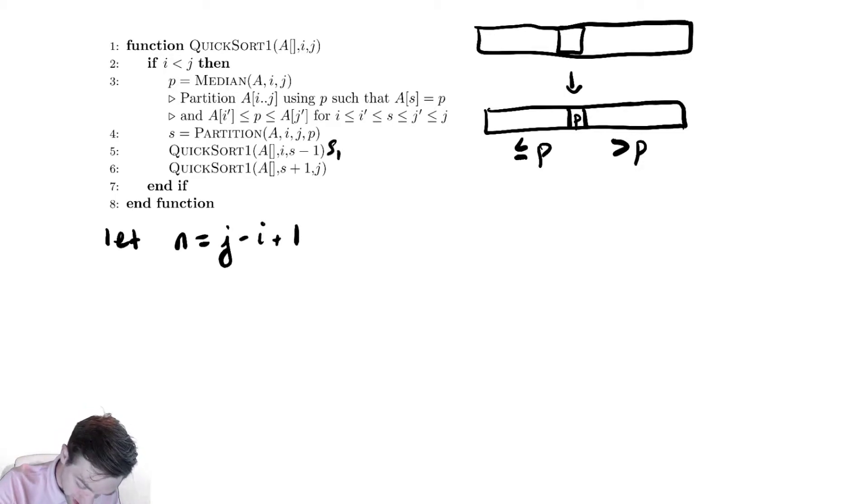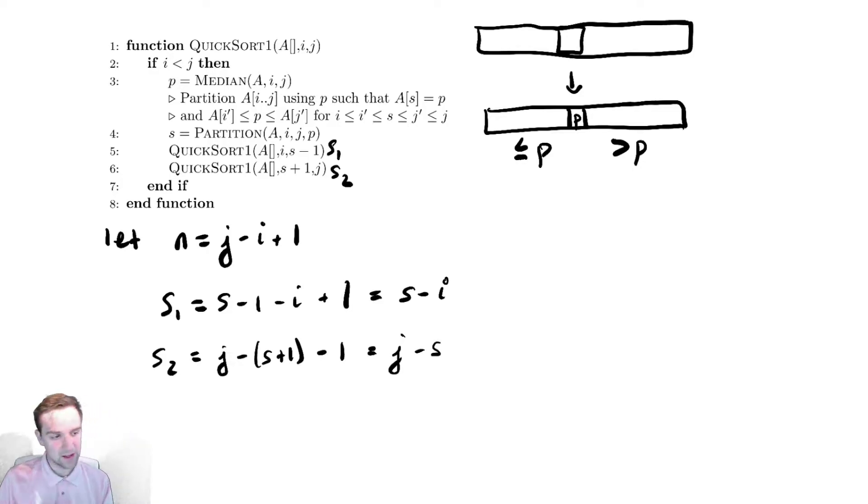If I call this s1 and this s2 for the sizes of those two things, s1 would equal s minus i minus i plus 1, which is s minus i. That's it. And s2 would equal j minus quantity s plus 1 minus 1, which is j minus s. And those don't look helpful to me because I don't have a good grasp of what s is.